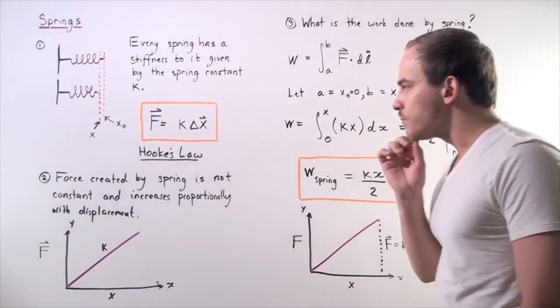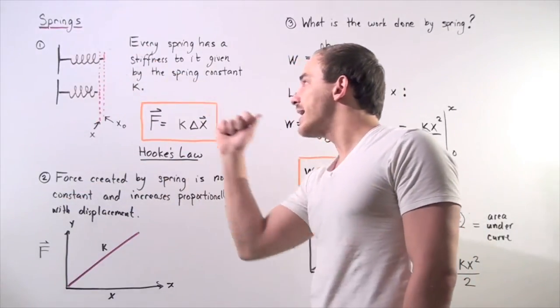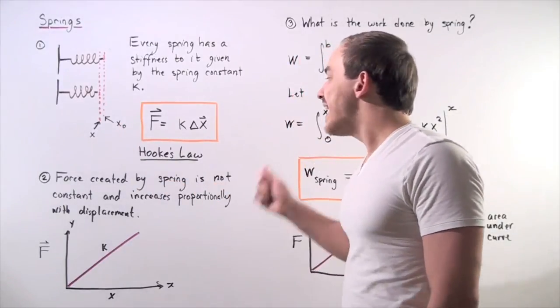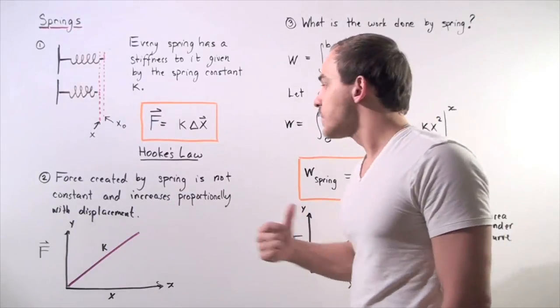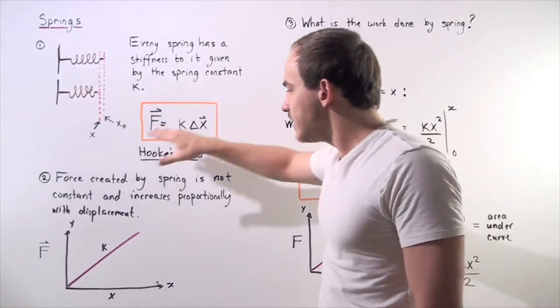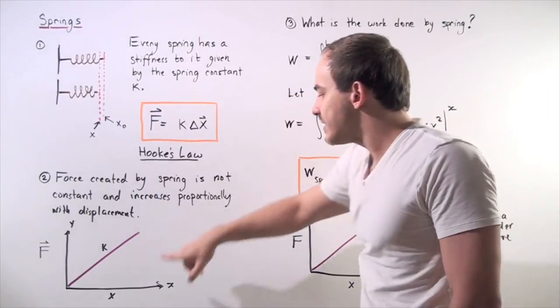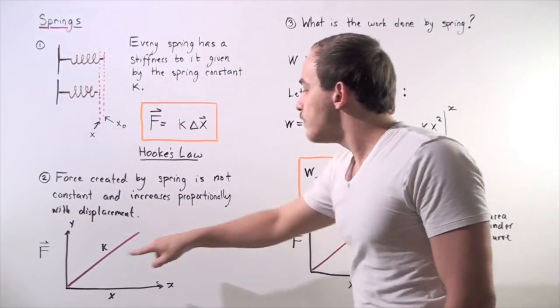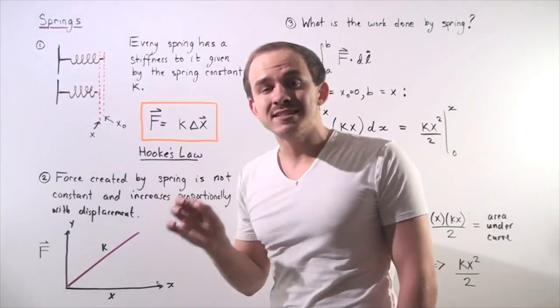So let's go to part two. Notice that this force created by the spring on my hand that resists my motion, resists my push, is not constant. In fact, it increases proportionally with the displacement. So if we take this formula and we plot it on the xy-axis, so the x-axis is my changing position, my displacement, and my F is the y-axis, and my slope is the k. So we see we have a linear constant slope.